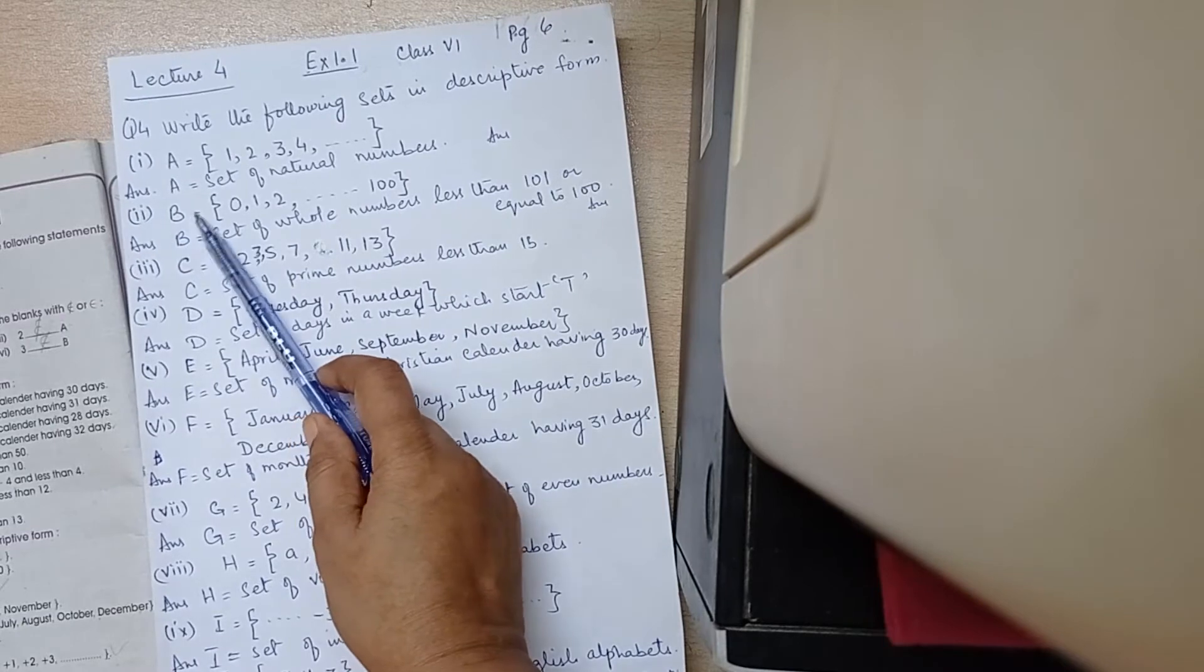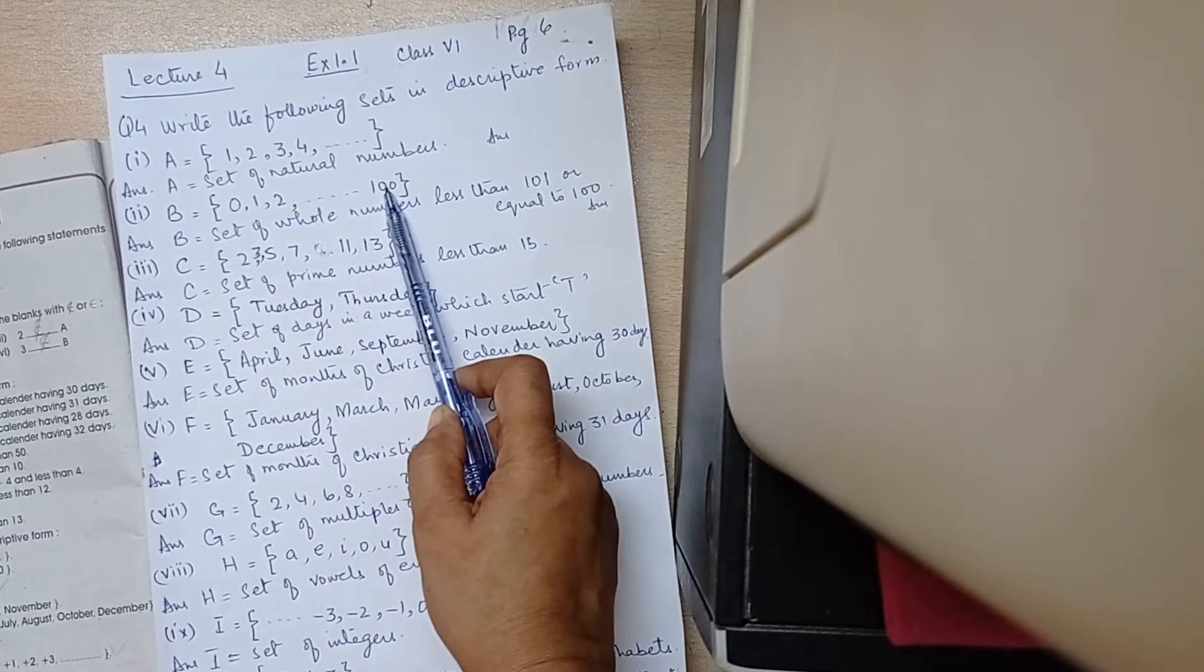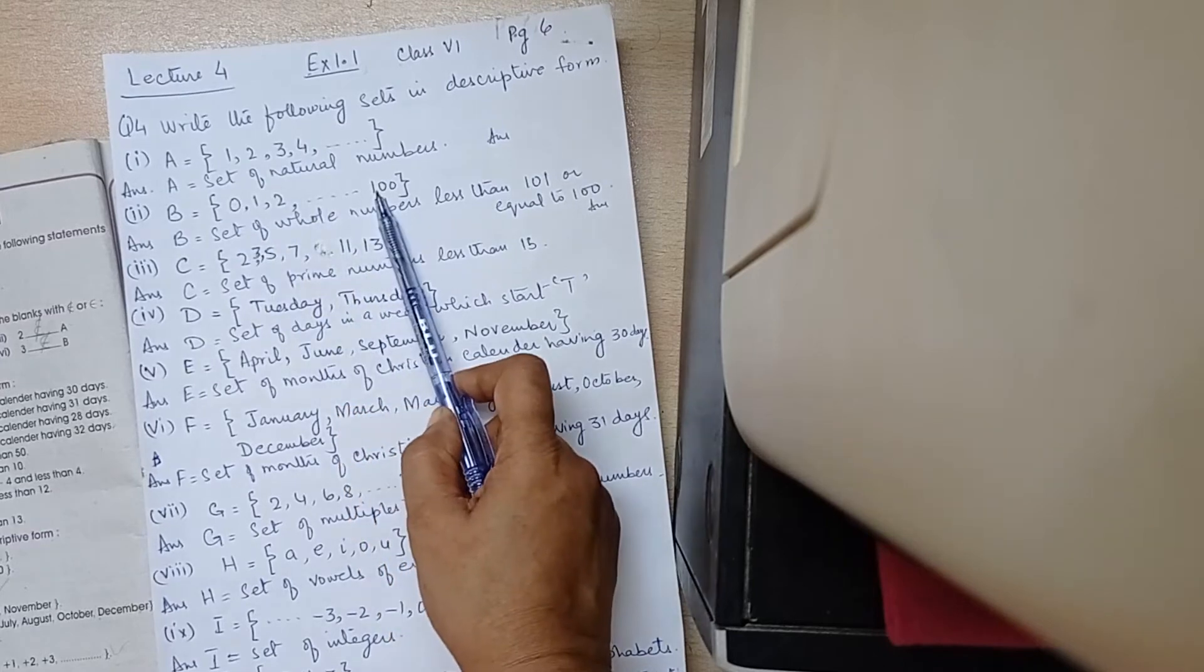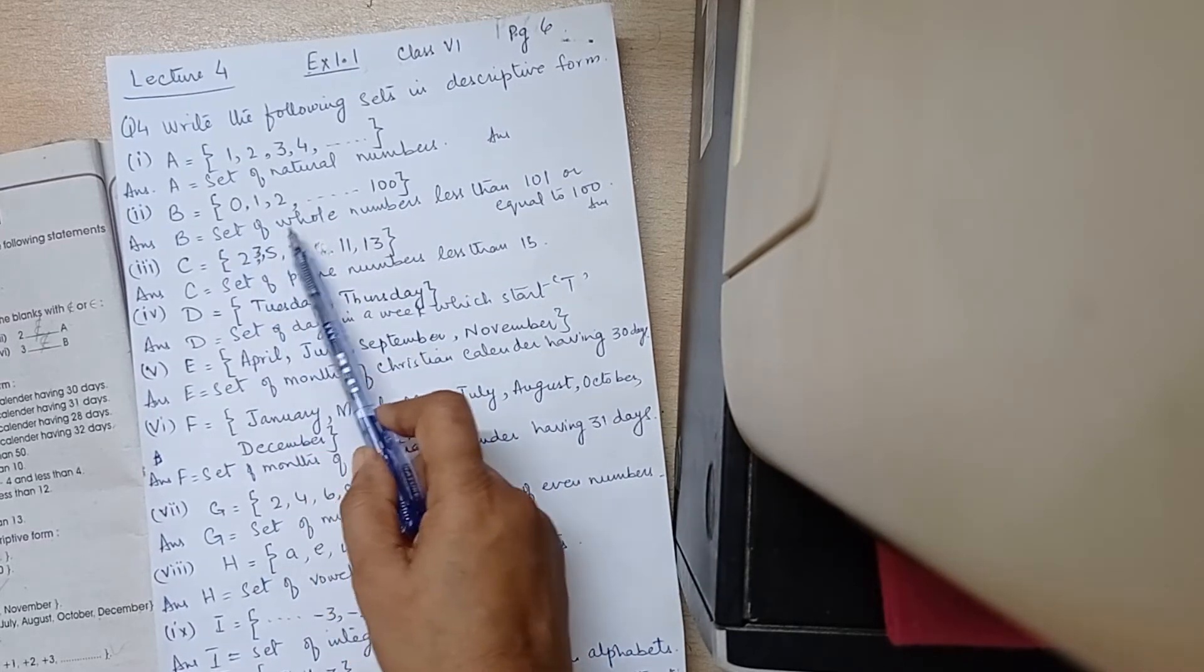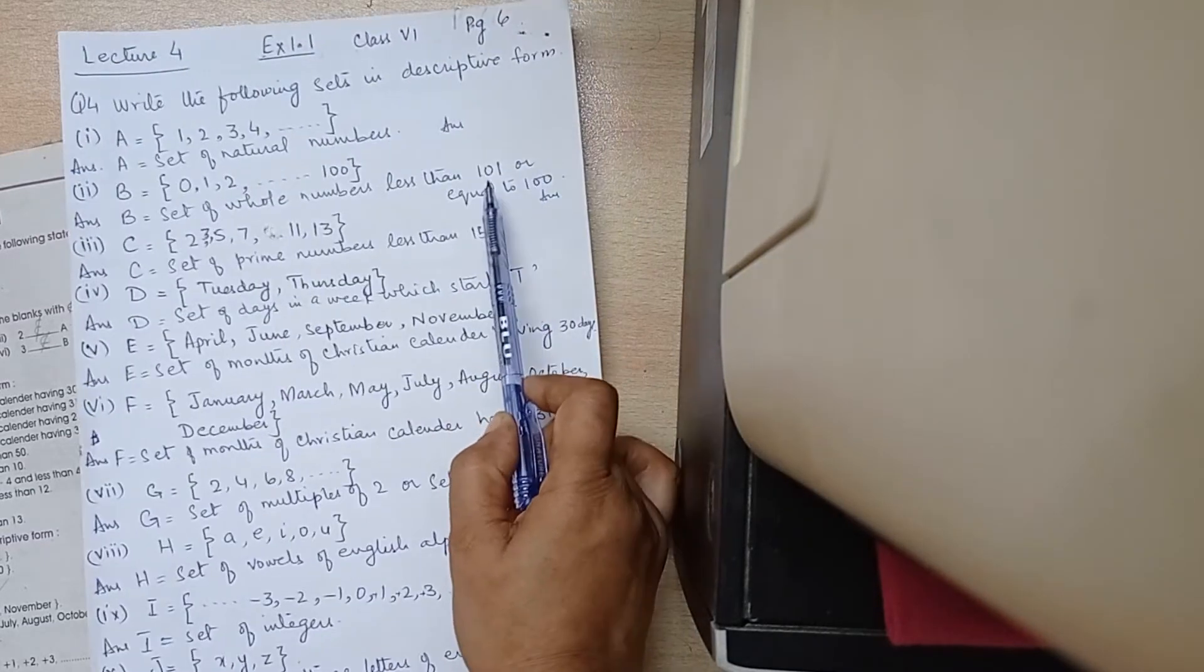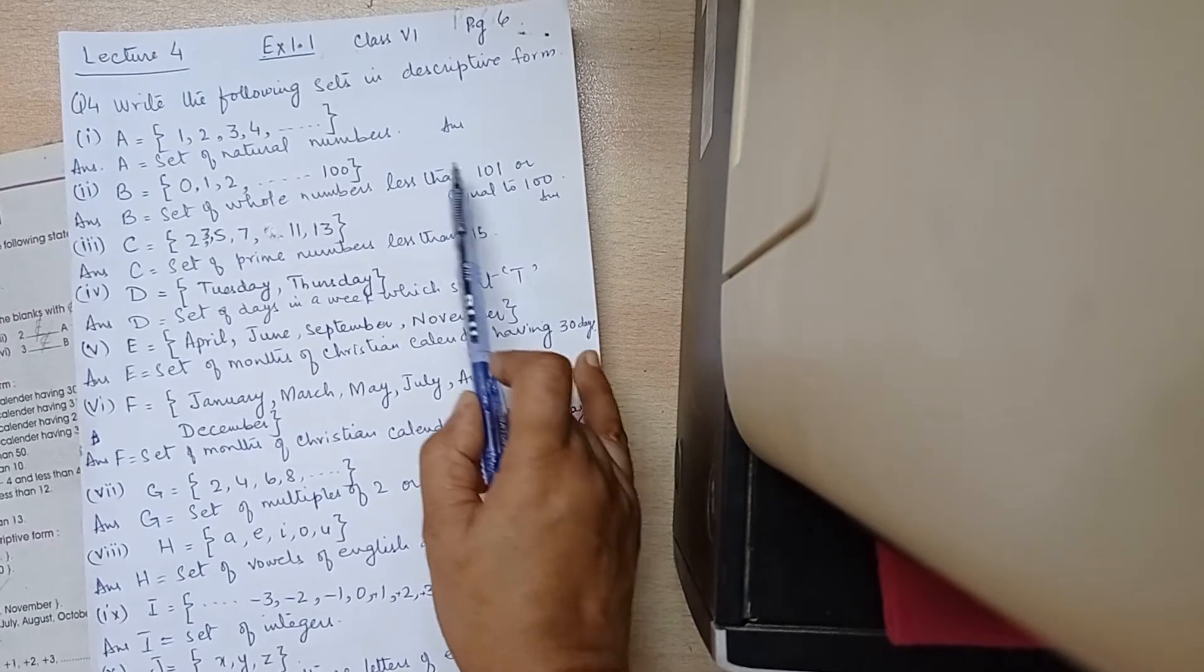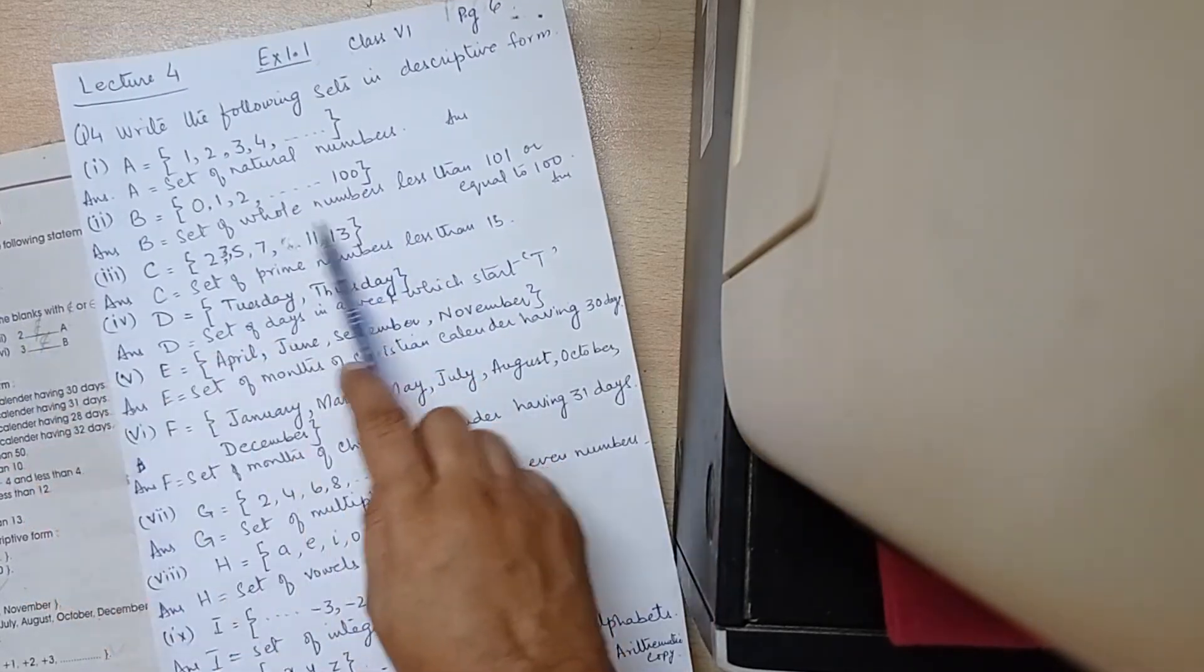Number 2, B is equal to 0, 1, 2, until 100. It means that limits are given. 100 is given. The number starts from 0, whole numbers. 0, 1 is given, or equal to 100. You can write this one.